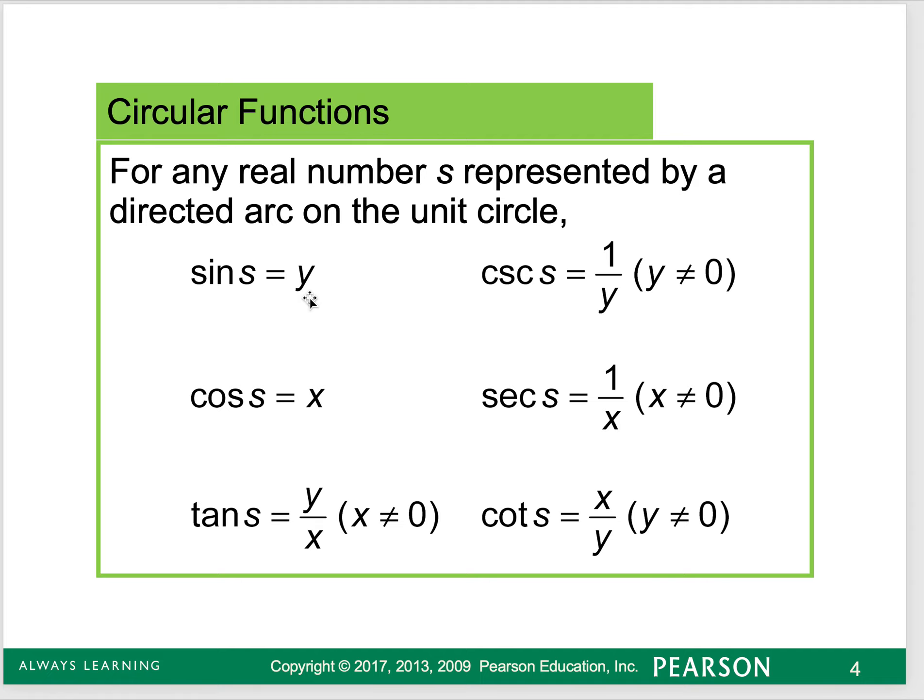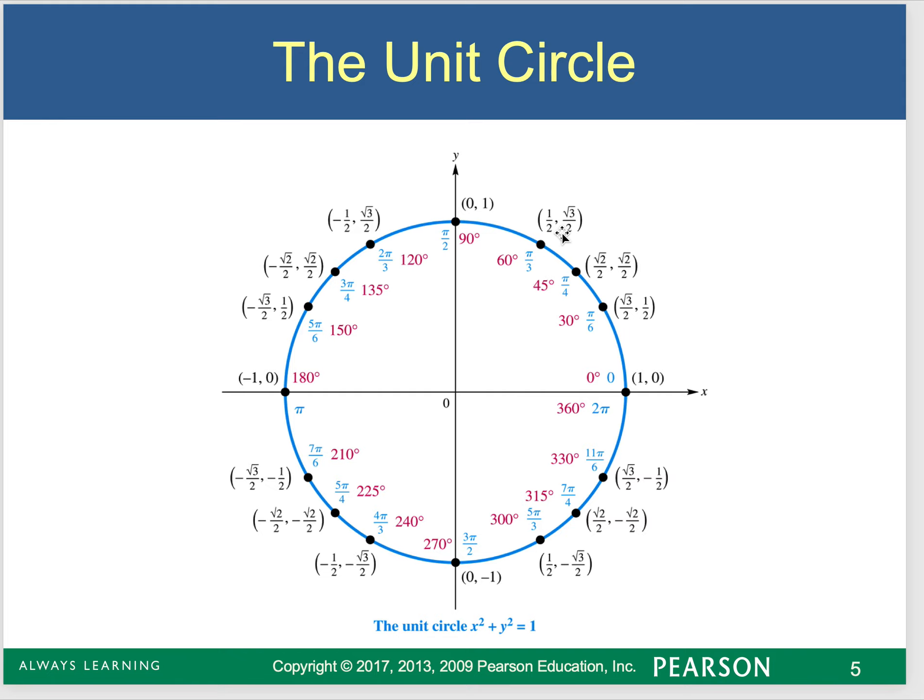We say 2, not 2 over 1. Cosine is x over 1, tangent is y over x. So then our three trig functions are going to just be the flip. These are the unit circle values.